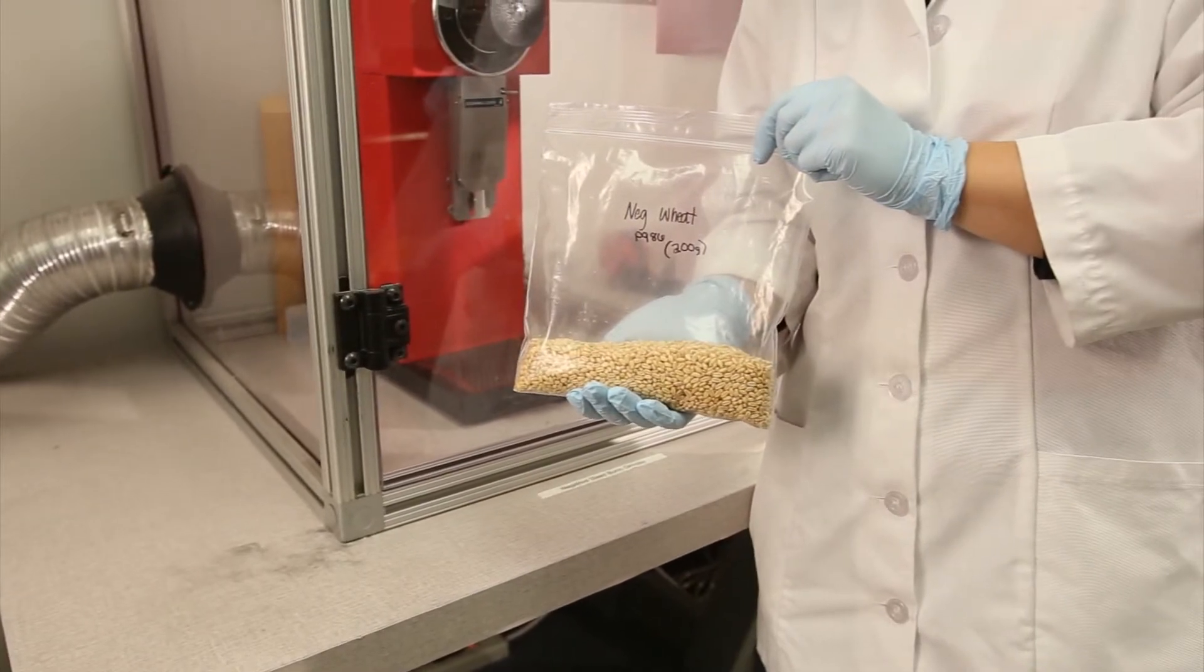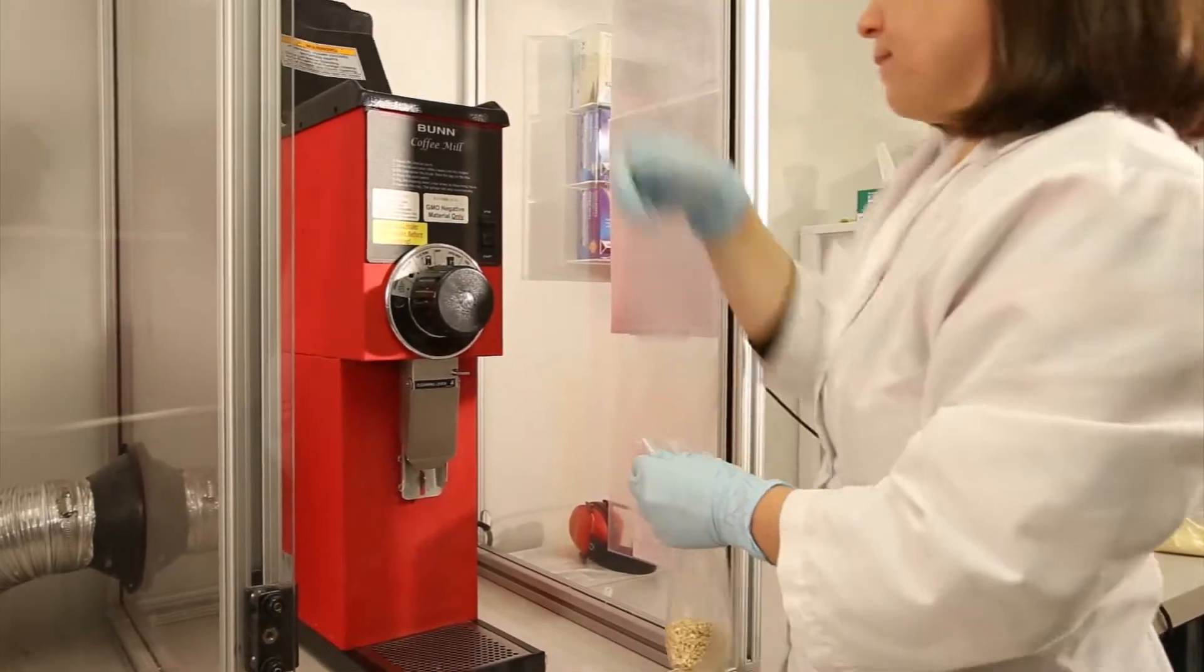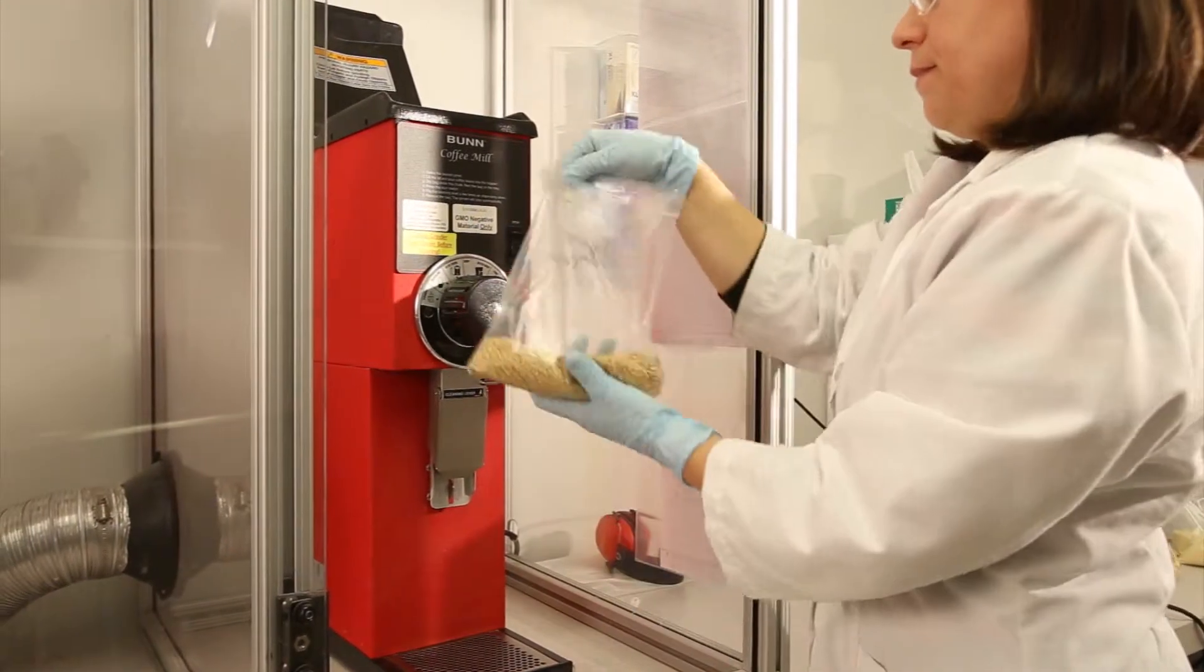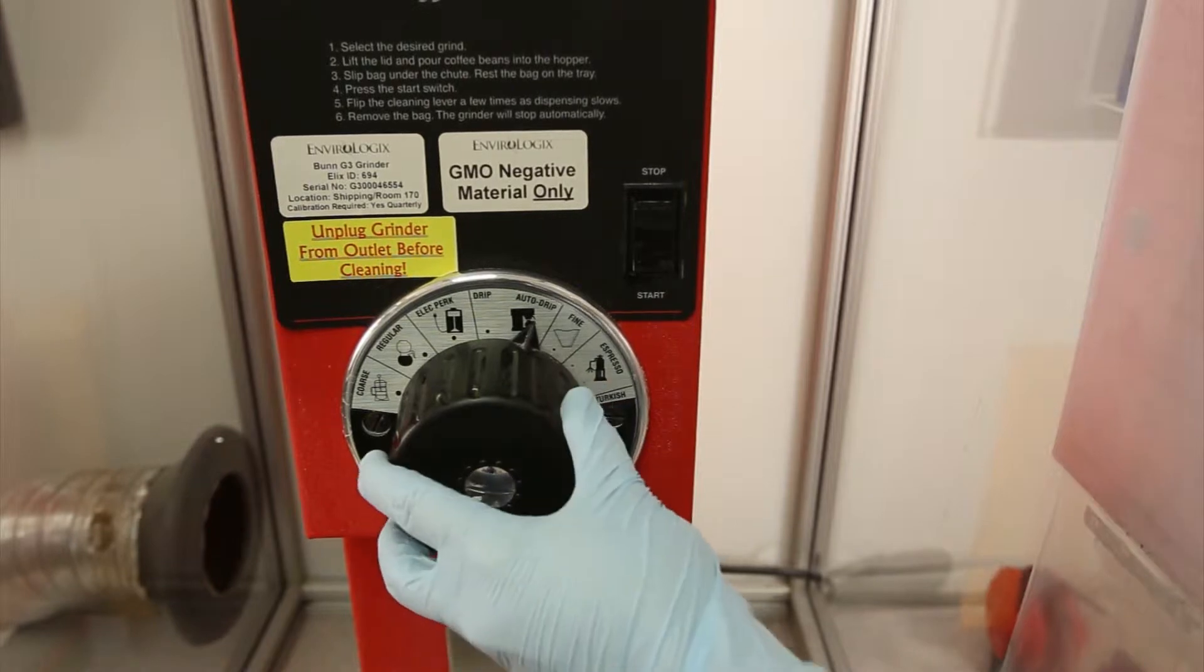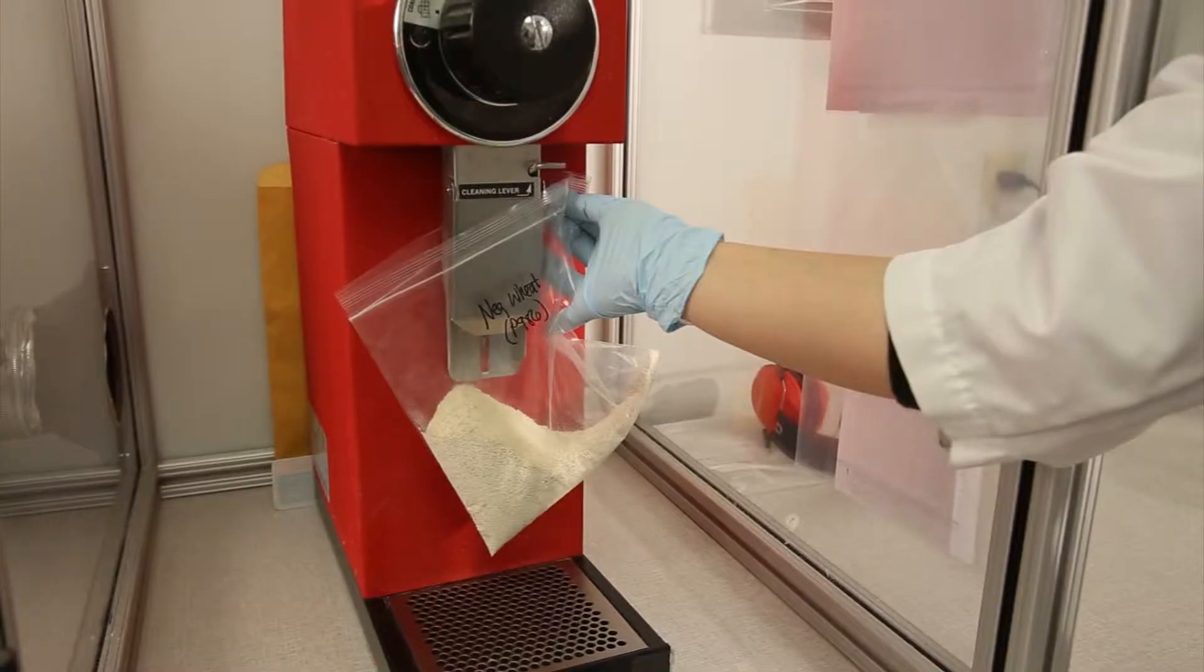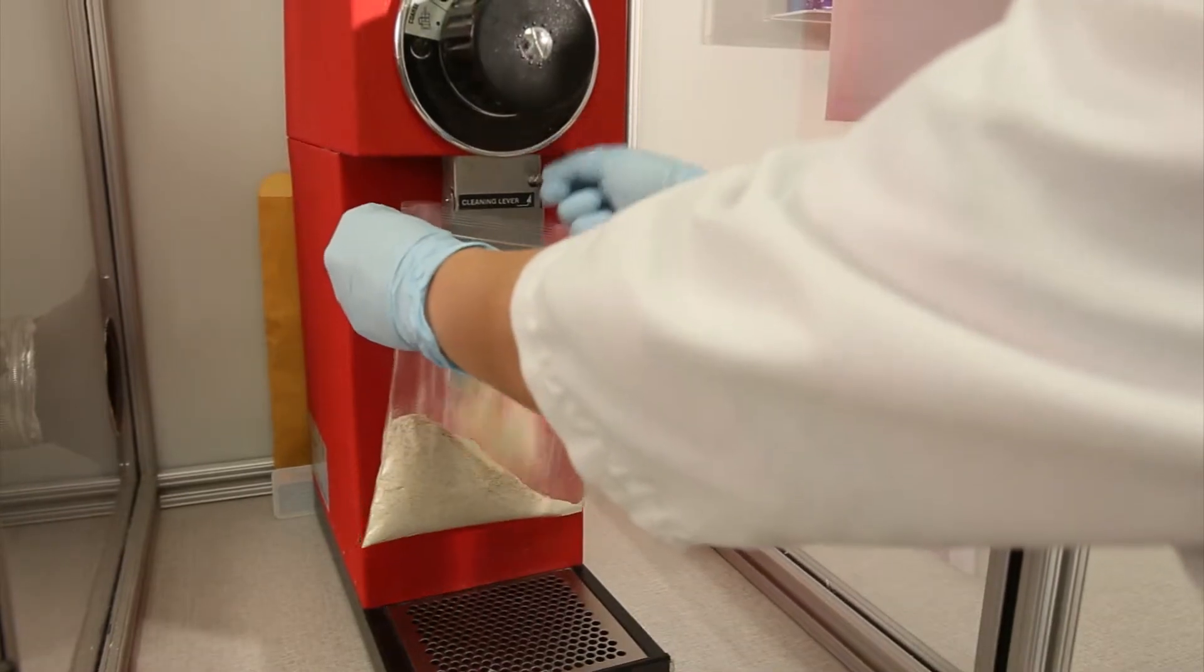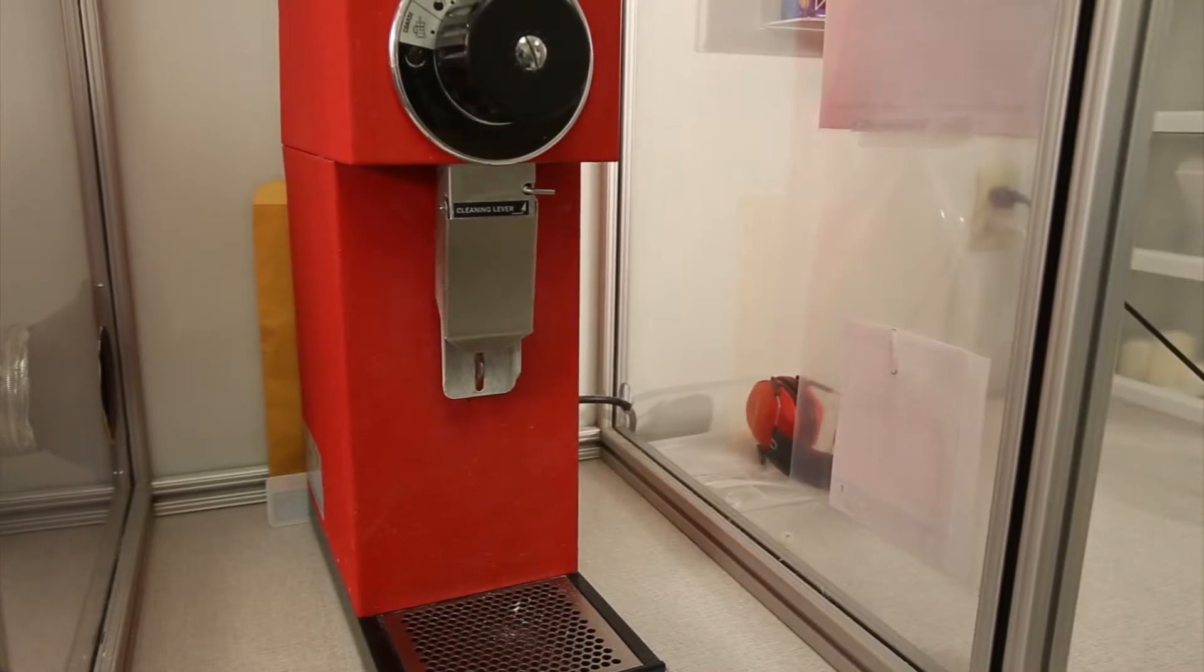Take a representative sample of grain to GIPSA or USDA guidelines or to your own internal specifications. Set a commercial bun grinder to the Turkish setting and grind the sample. Gently pull the release lever to ensure that most of the sample is cleared from the grinder.